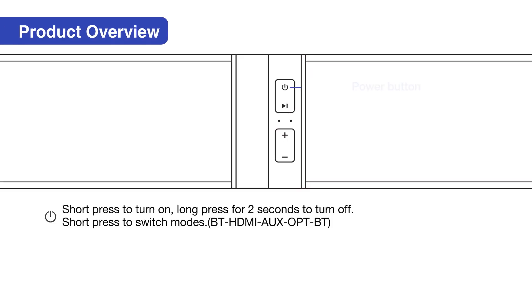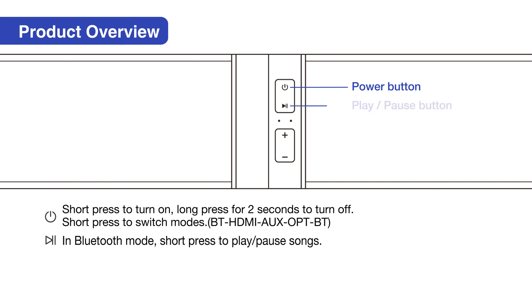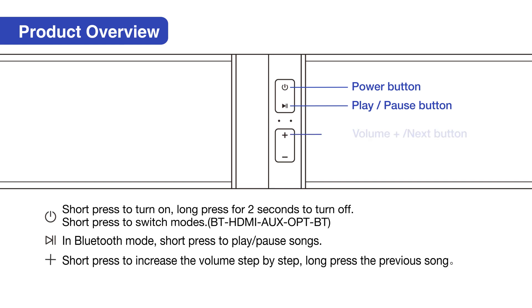This is the power button. You can short press it to turn on, or long press for 2 seconds to power off. After the soundbar is turned on, you can switch between Bluetooth, HDMI, auxiliary, and optical mode by short pressing the power button.